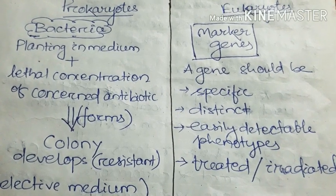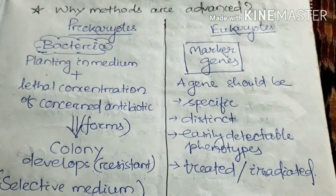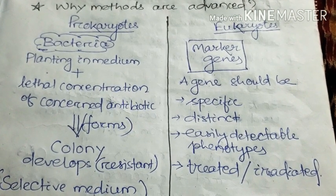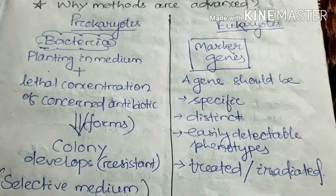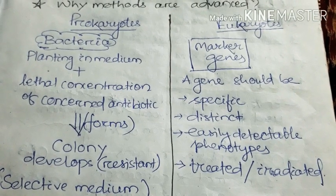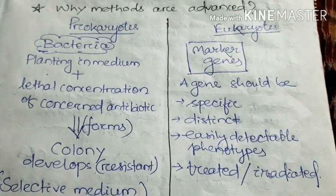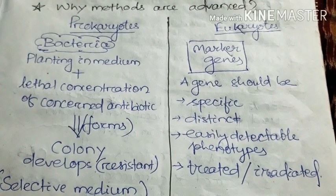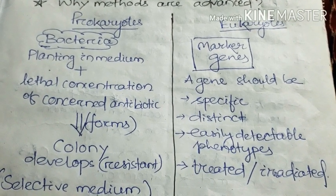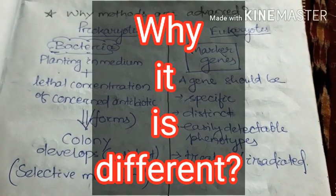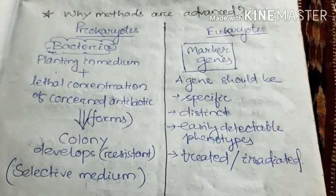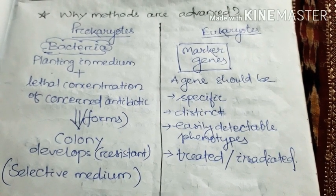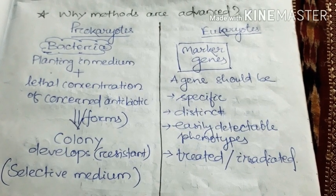Can we continue that same process in eukaryotes? No — that was for prokaryotes. To detect mutation in eukaryotes, we need marker genes. The gene should have specific, distinct, or easily detectable phenotypes, or be treated with some ionizing method. Why the difference? Because finding rare mutations in multicellular organisms is very difficult compared to microorganisms, so techniques have been designed to select those rare mutations.